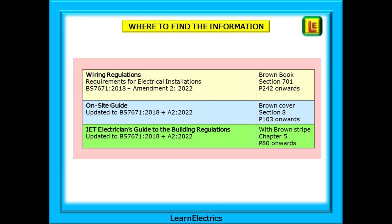Depending on which books you have to hand, here is where to find relevant information in each of them. All three books each contain extra little bits of information that don't appear in the others. We are working to Amendment 2, the brown book. If you are still using the blue book or Amendment 1, then the page numbers and some of the information will not match.